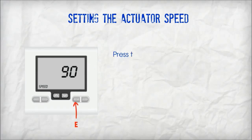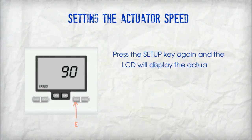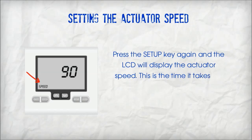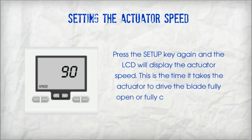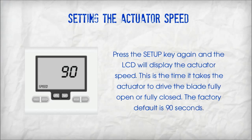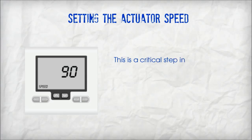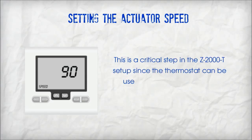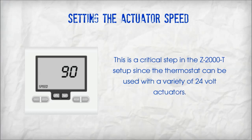Setting the actuator speed. Press the setup key again and the LCD will display the actuator speed. This is the time it takes the actuator to drive the blade fully open or fully closed. The factory default is 90 seconds. This is a critical step in the Z2000T setup since the thermostat can be used with a variety of 24-volt actuators.